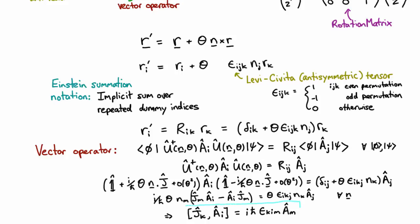This relationship here shows that the commutators of any vector operator have this relationship with the generators of rotations, which is angular momentum. That's true for all vector operators. To do this, we had to swap the order of two of these indices, which gave us a minus sign.